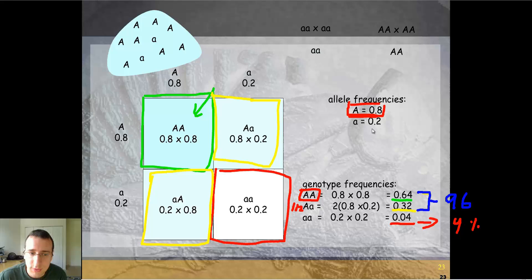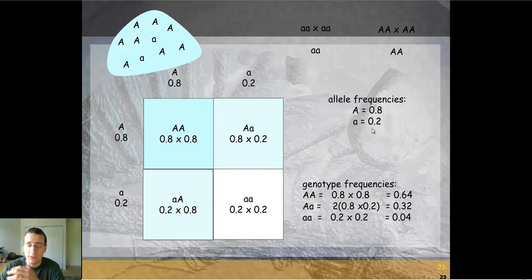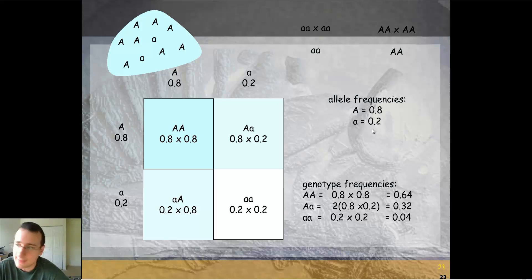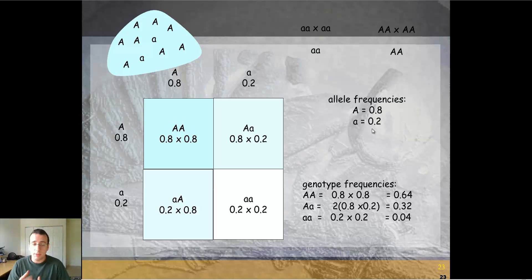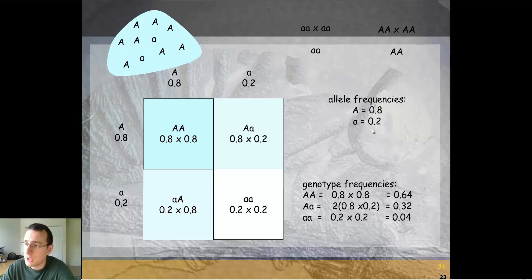Notice that allele frequencies do not change from the previous generation to the next through sexual reproduction. Sexual reproduction does not change the population — it only shuffles genes around to create new combinations. You still have the same number of dominant and recessive alleles; no new alleles are added, only a reshuffling into new genotypes and phenotypes. Without new mutations or selection causing a change in frequencies, the population is not evolving.